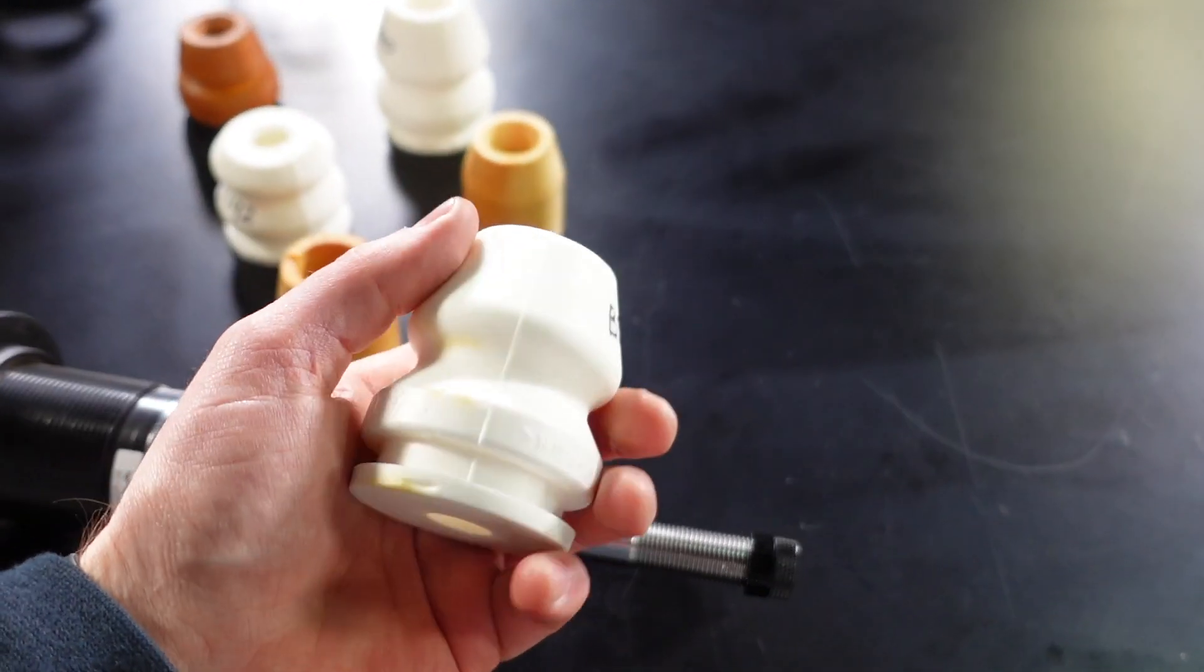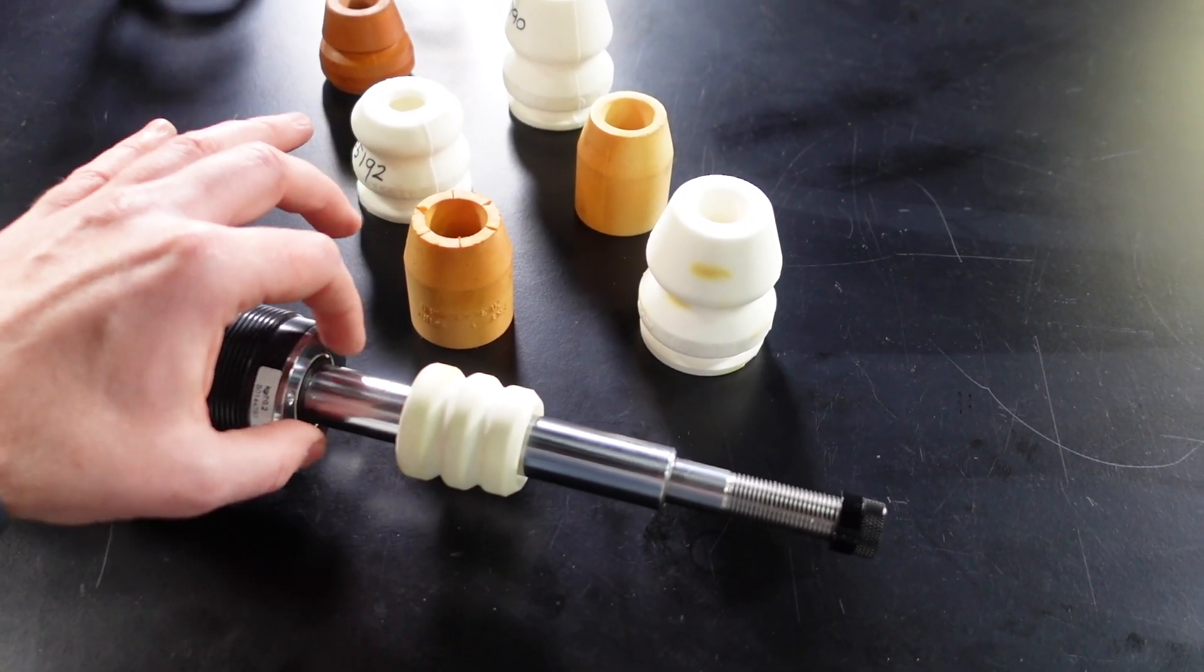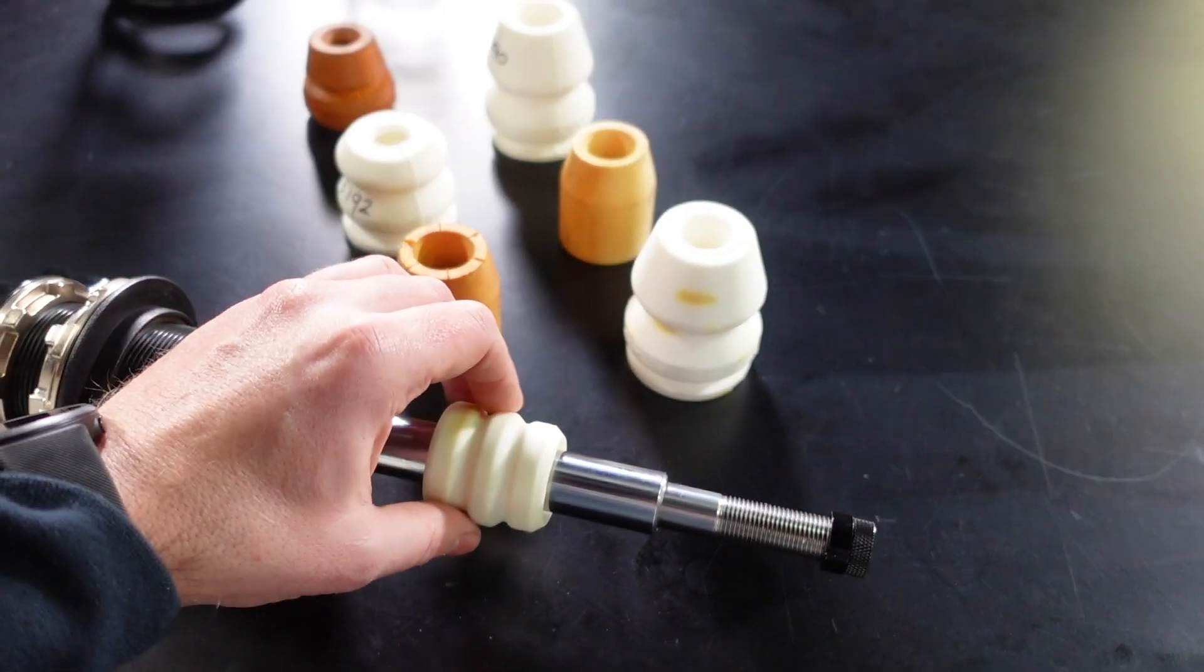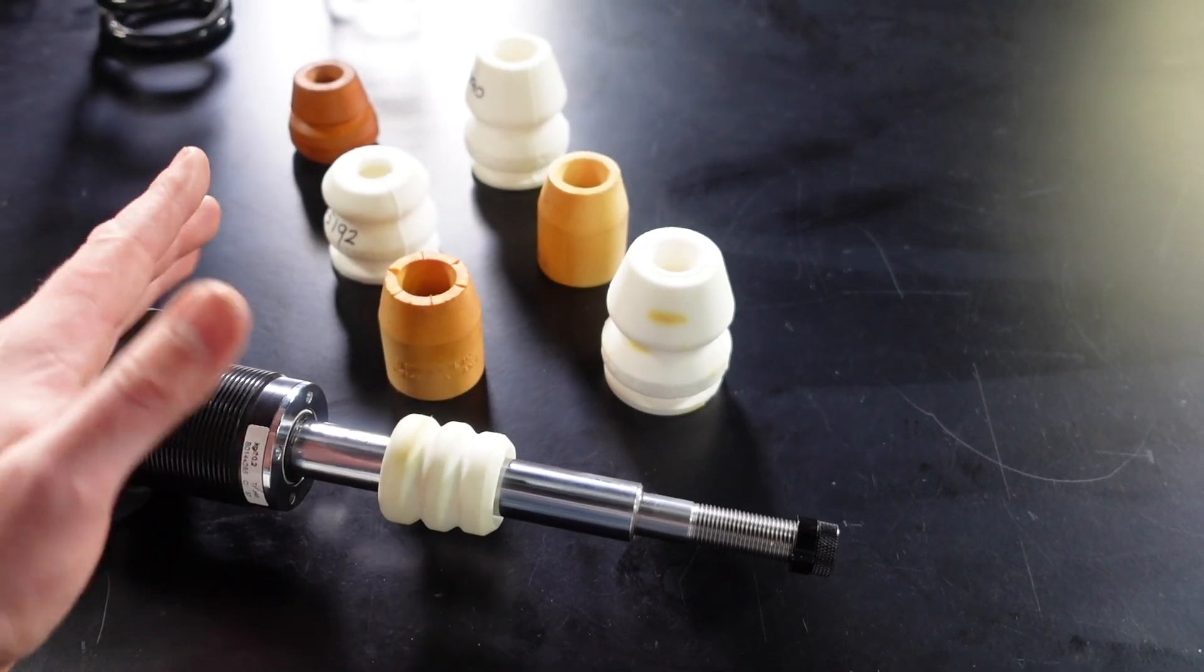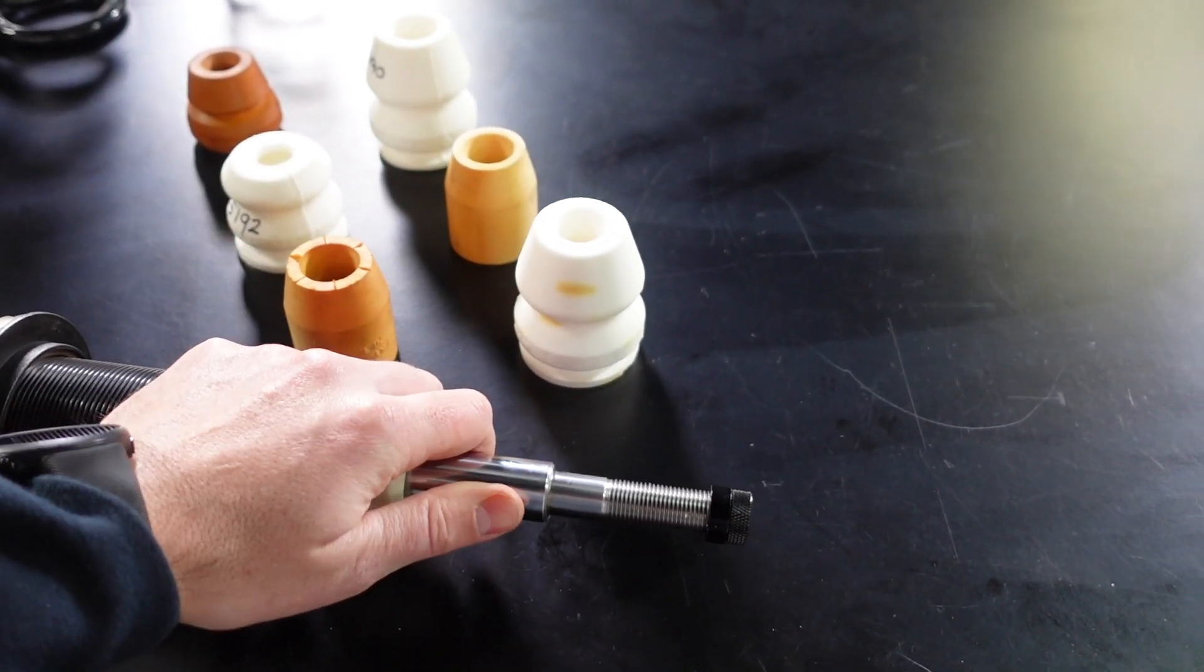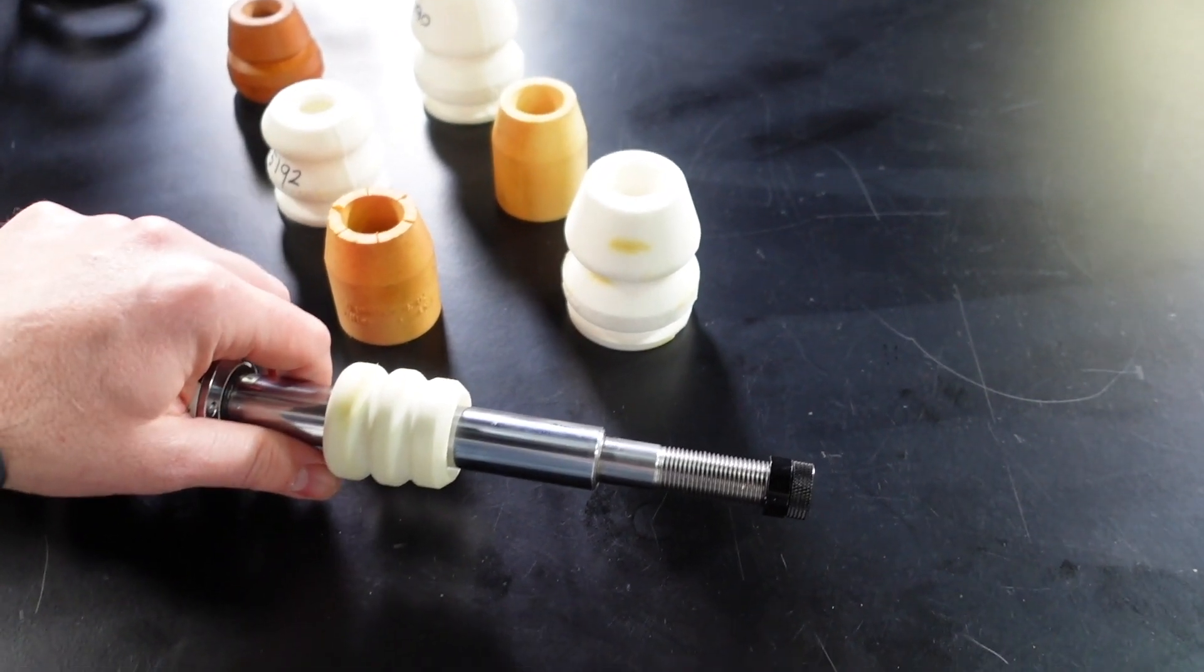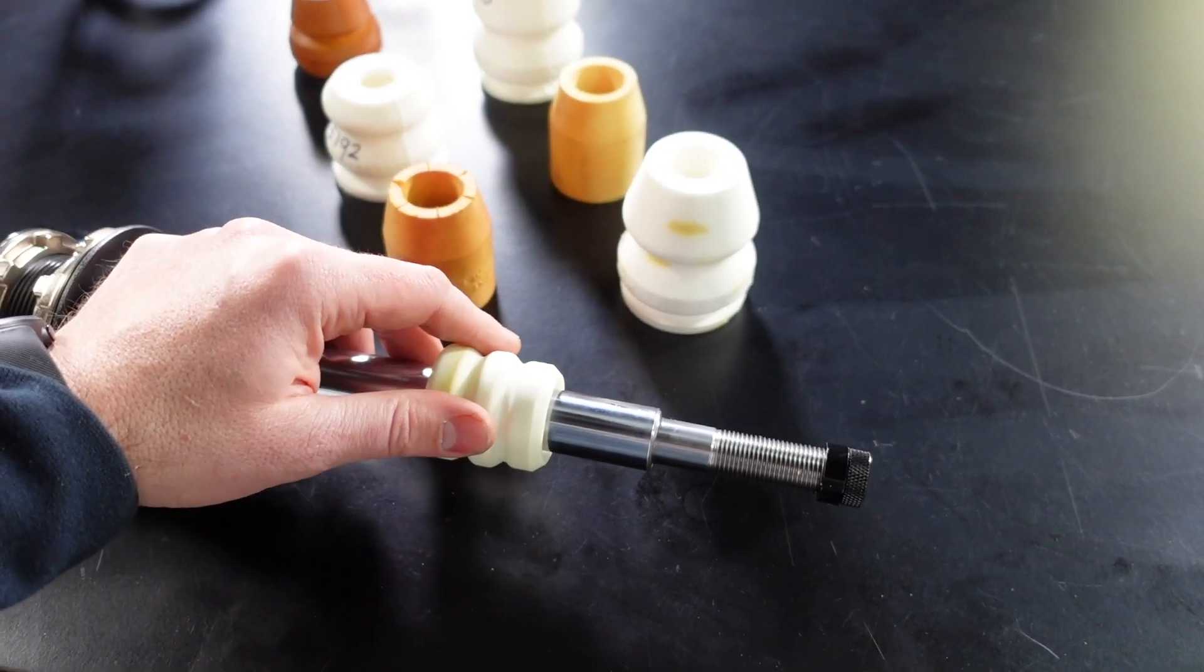So the tuning of the bump stop becomes really critical to get that right. Sometimes it means choosing a different bump stop or it can mean tuning the packer gap, so adding those spacers I was talking about underneath the bump stop so that when the suspension compresses, we make sure that the bump stop is engaged really hard before the tyre comes into contact with anything.